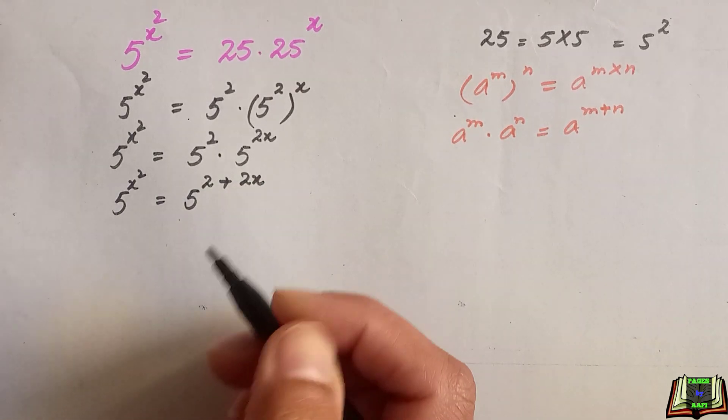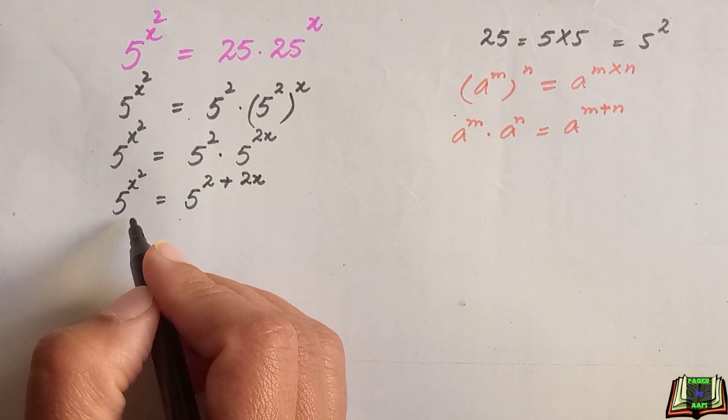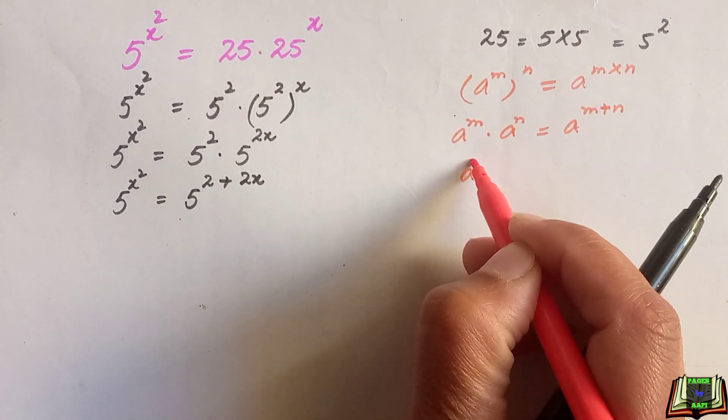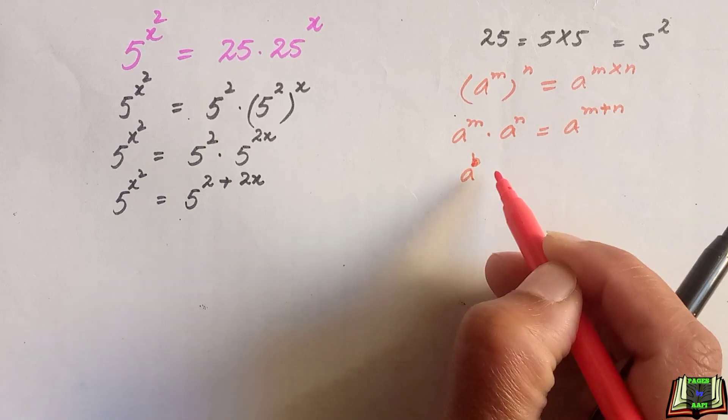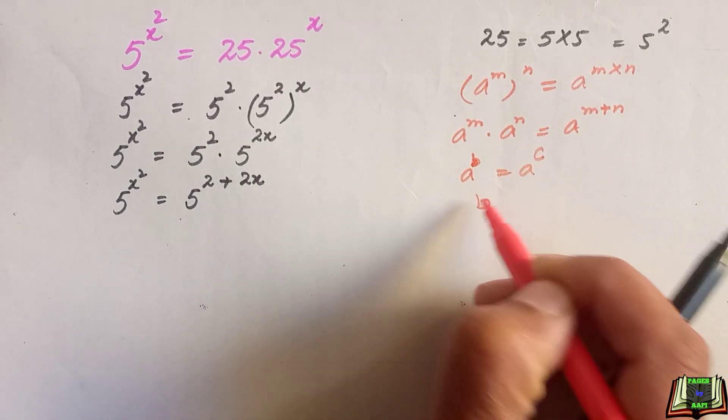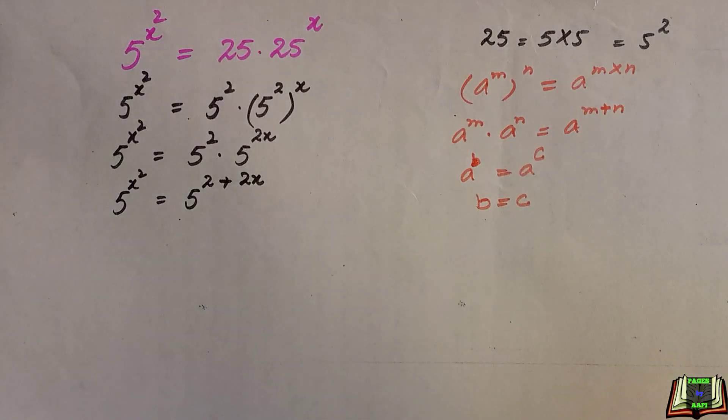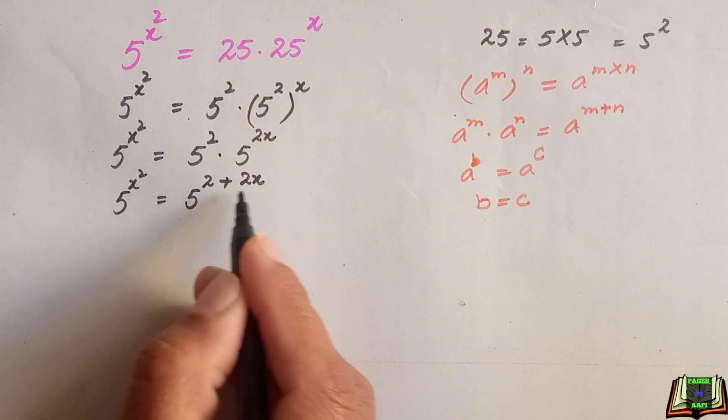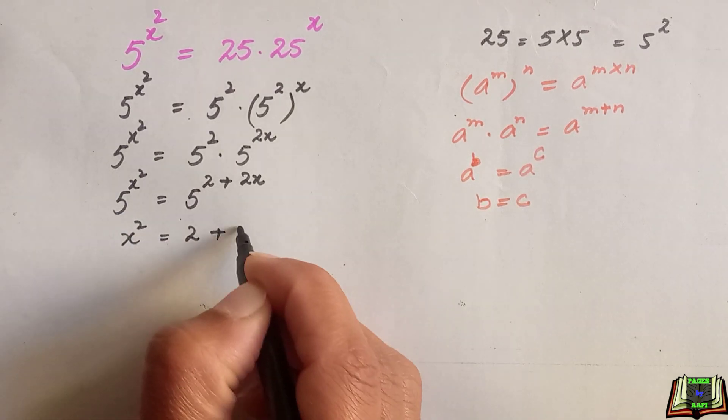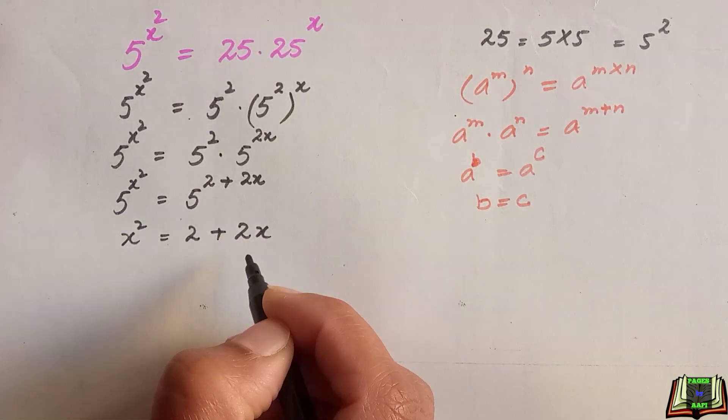If bases are same we can equate the powers because we know that if a raised to power b is equal to a raised to power c, then b is equal to c. So using that rule we can say that x square is equal to 2 plus 2x.